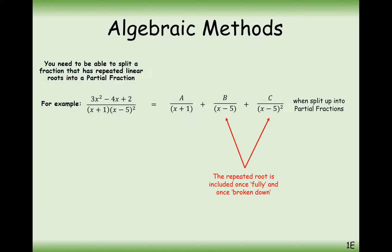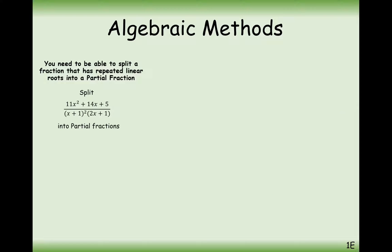Now looking at this next question: 11x² plus 14x plus 5 over (x+1)²(2x+1), split into partial fractions. We need one term with a power of 1 on the x plus 1, a second term where x plus 1 is being squared, and a third term where we have C over 2x plus 1.